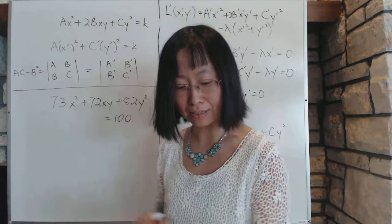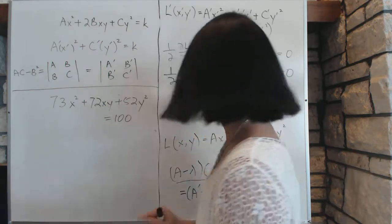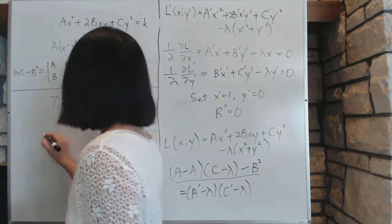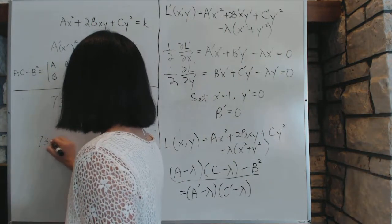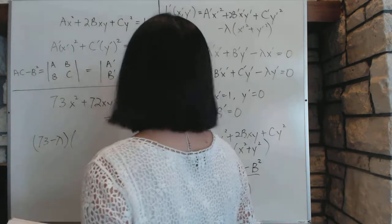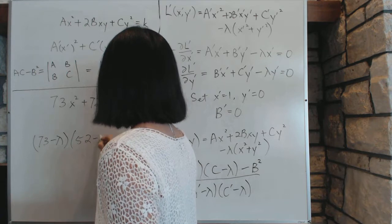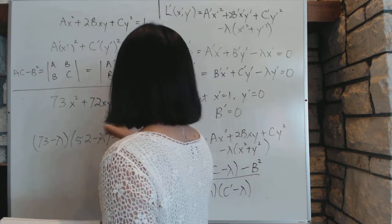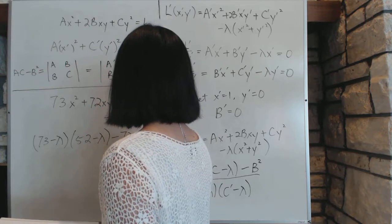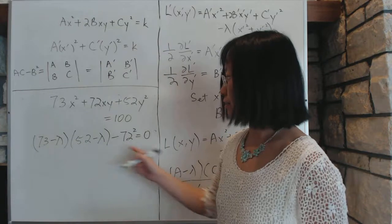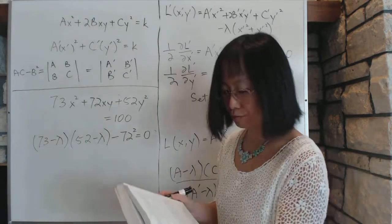So we follow this particular equation, and we get (a minus lambda), which is (73 minus lambda), times (c minus lambda) is (52 minus lambda), and then minus b squared, b squared is 72, equal to zero. And that is a very simple quadratic equation.